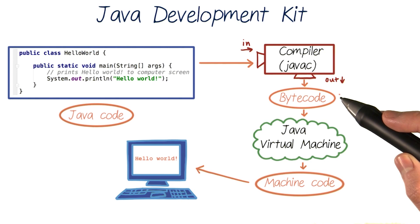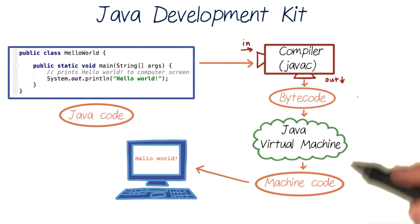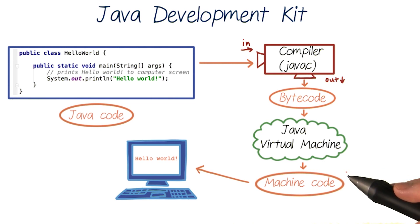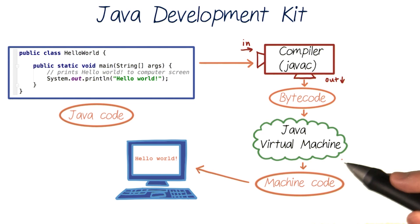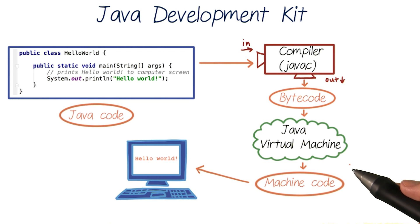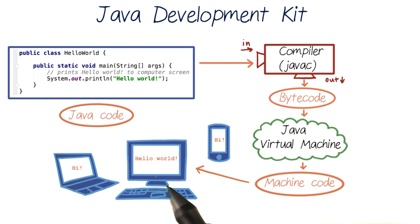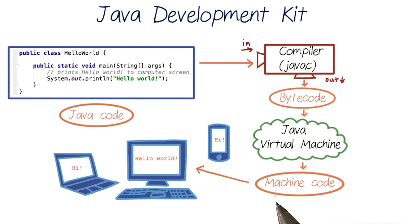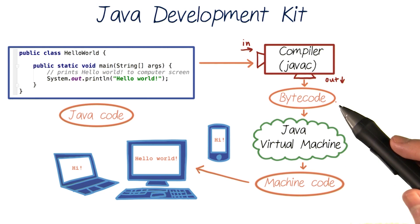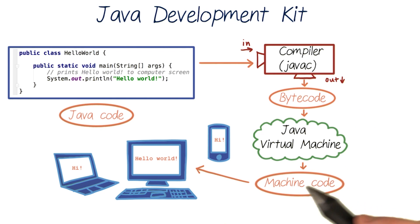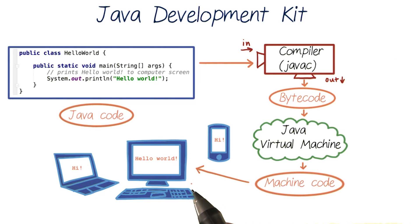But you might be wondering why the compiler doesn't translate your Java code to machine code straight away. Why is there this extra virtual machine translation step? Well, the Java Virtual Machine is one of the coolest things about Java, because it works differently depending on the type of operating system it's on. So if it's on Windows, Mac, or even a mobile device, all these platforms need slightly different machine code to work. And the virtual machine will translate bytecode into the correct machine code for any platform it's on, so Java programs can run on any device.